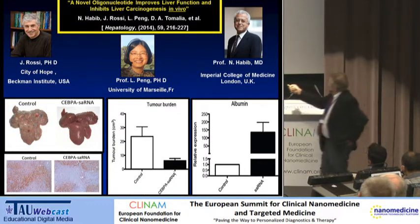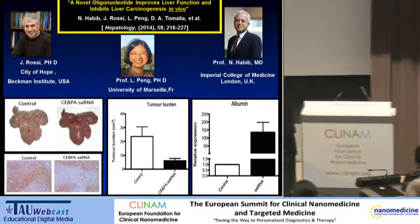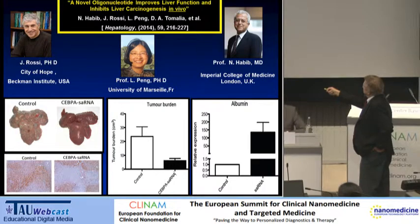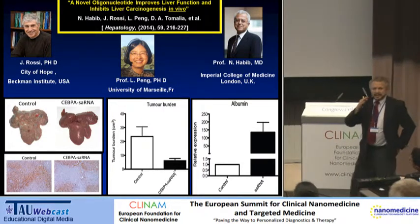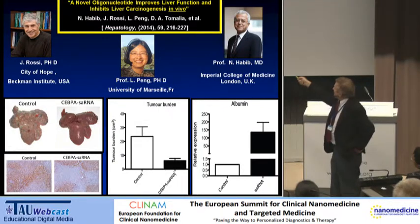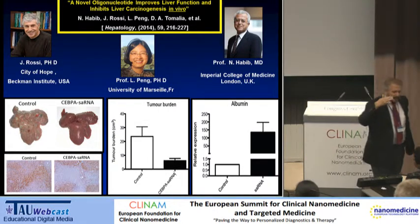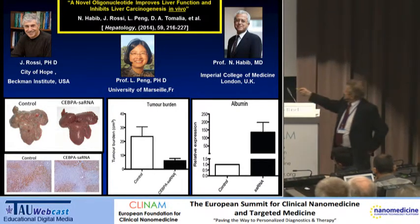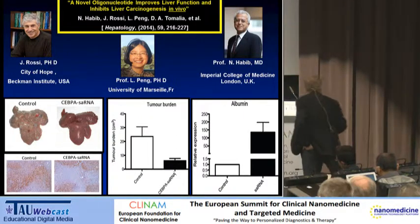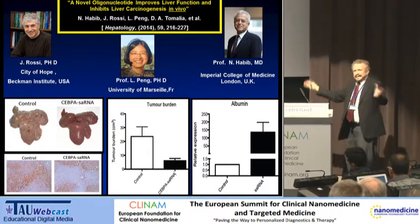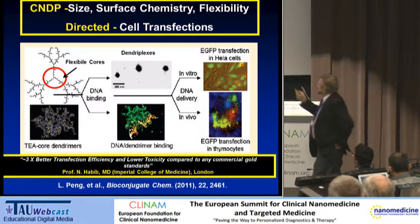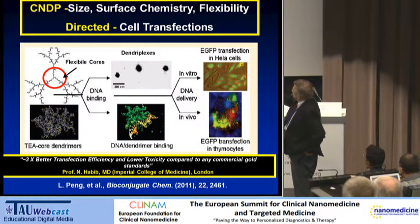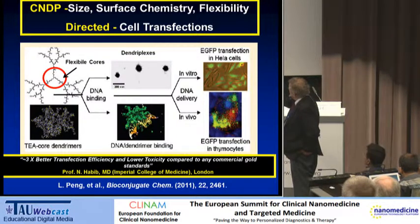These are the key people involved. John Rossi from the City of Hope developed all of the saRNA sequences discussed here today. Ling Ping developed the flexible core PAMAM-dendrimer derivatives used as vectors. Professor Nagib Habib is the chief oncologist at Imperial College London who orchestrated all of this. This dendrimer Ling Ping developed was a flexible core dendrimer shown to be more than three times more efficient in transfection and substantially less toxic compared to any other commercial gold standard.